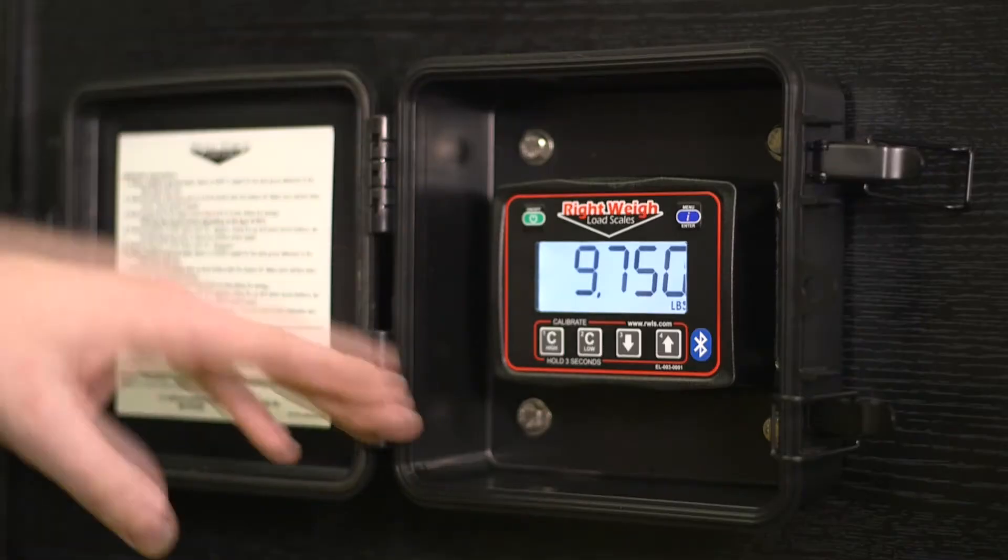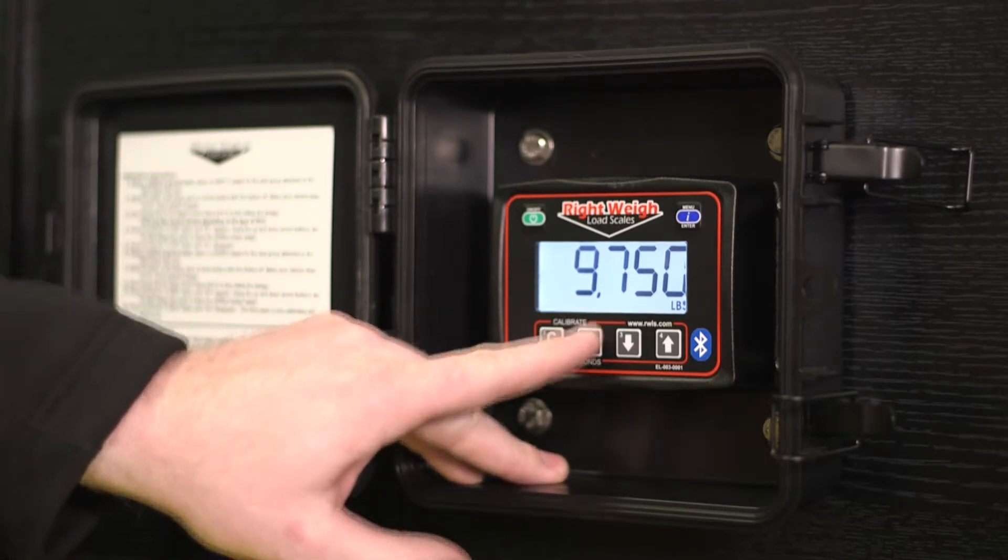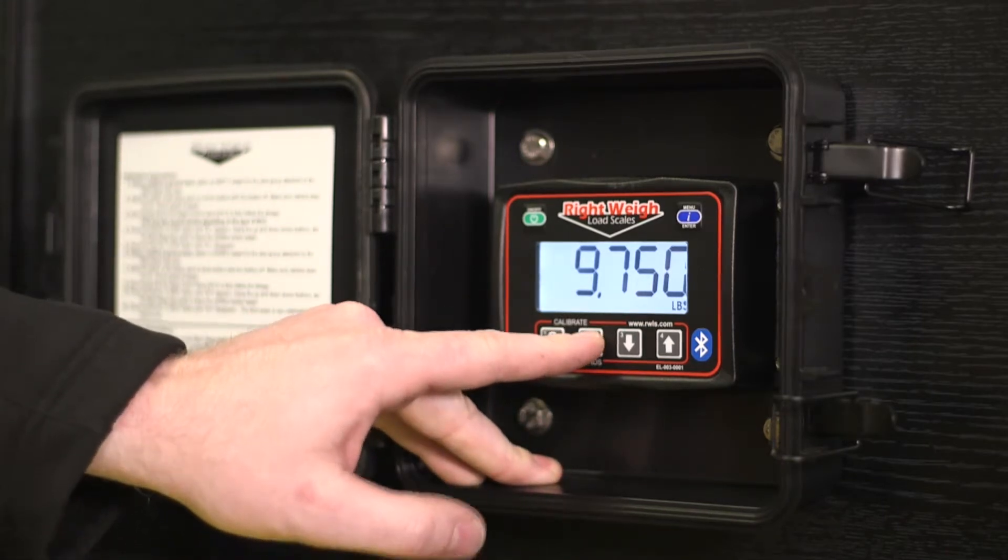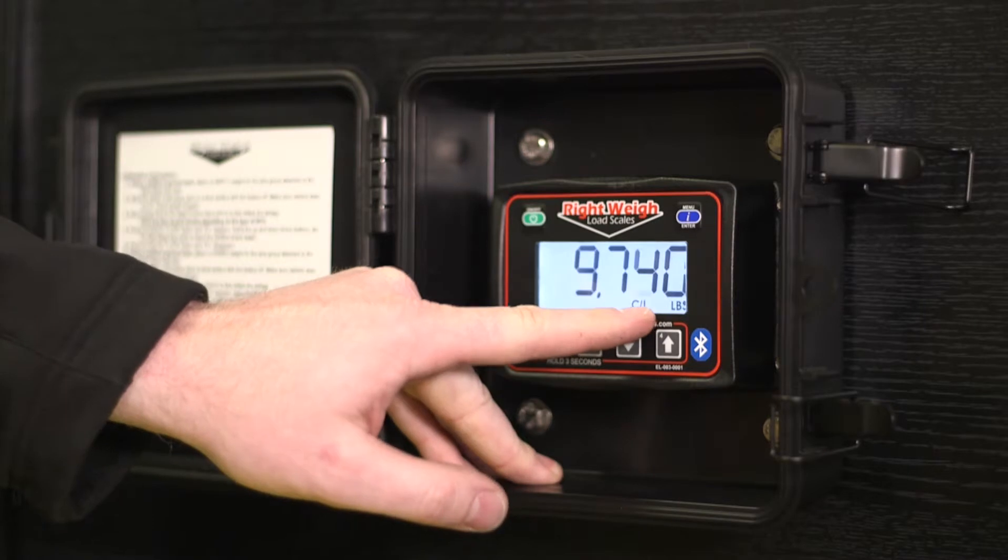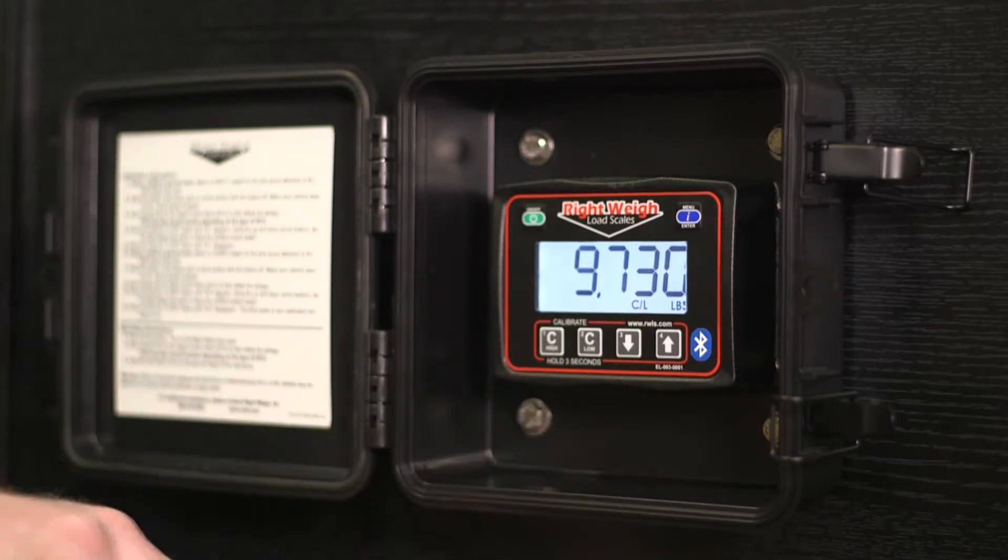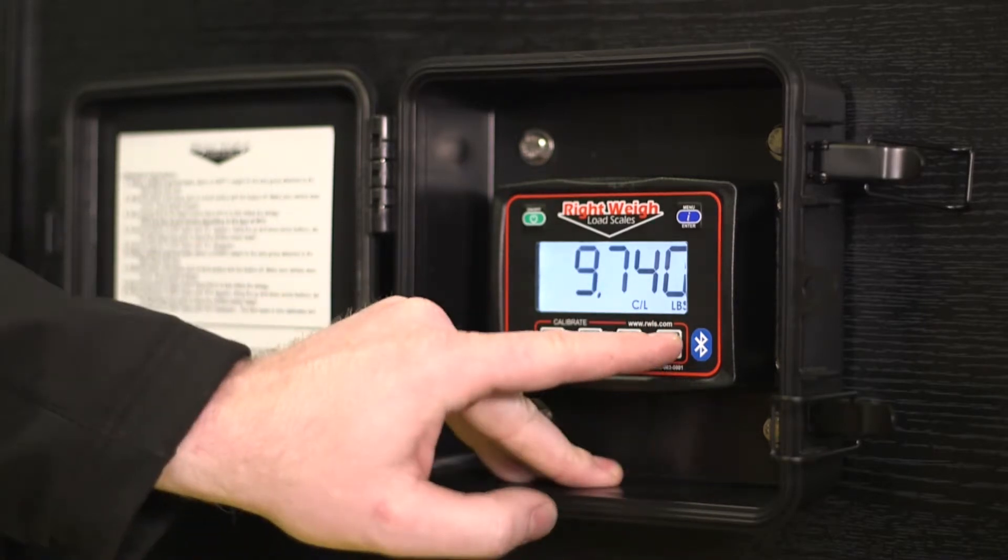So we're going to go do a low cal. So we'll hold down cal low until you see CL pop up. And we'll raise that number up with the up arrow to 13,100.